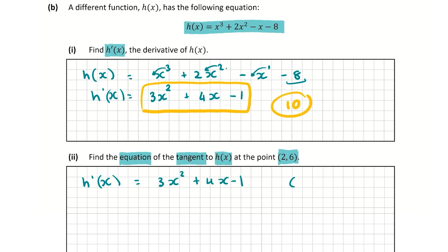I'm going to fill in 2 to find the slope of the tangent at this point. So h'(2) = 3(2²) + 4(2) - 1. That's 3 by 4 because it's 2 squared, plus 4 by 2 which is 8, minus 1. So that's equal to 12 + 8 which is 20, minus 1, which is 19. So that is the slope of the tangent.